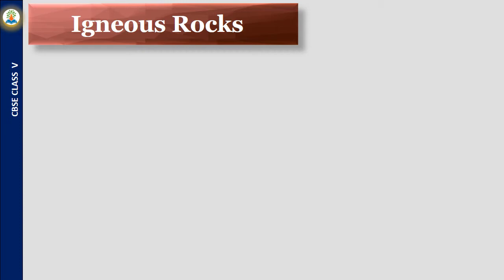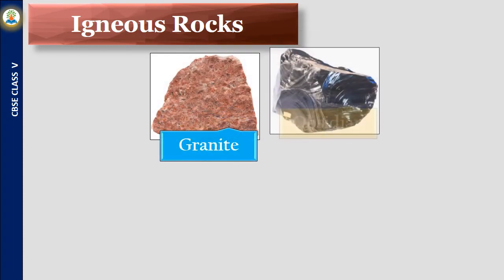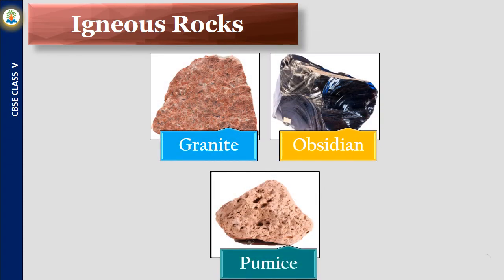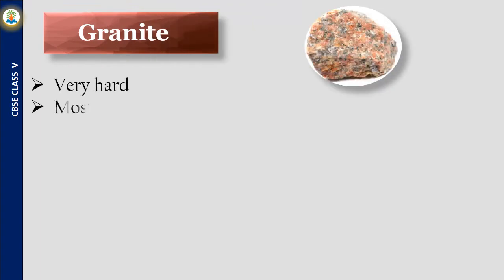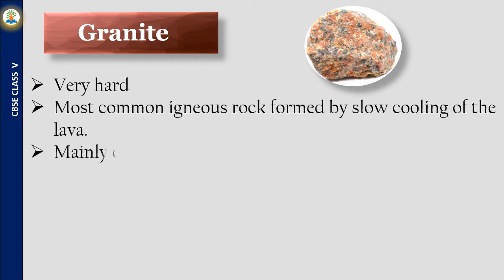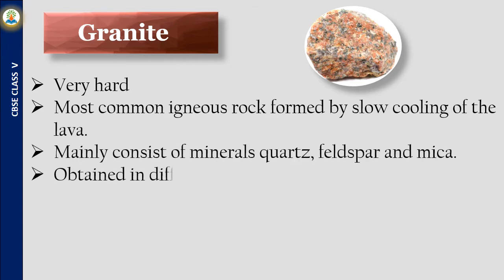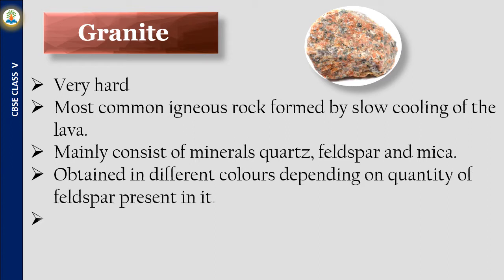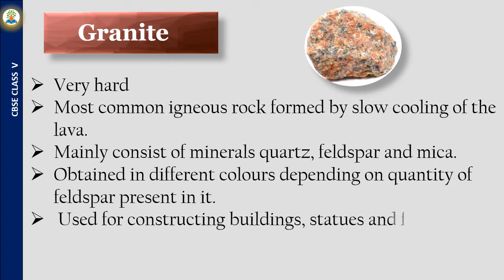Based on the type of minerals and the size of mineral particles, igneous rocks are classified as granite, obsidian, and pumice. Granite is a very hard and most common igneous rock, formed by slow cooling of lava. It mainly consists of minerals quartz, feldspar, and mica. It is obtained in different colors depending on the quantity of feldspar present, and is used for constructing buildings, statues, and floors of houses.